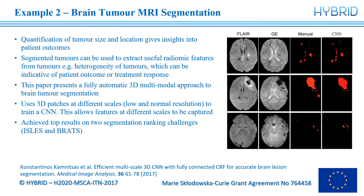Secondly, an example of tumour segmentation. Tumour segmentation allows for extraction of quantitative features from the tumour regions such as size and shape. We can also extract radiomic features such as heterogeneity of the tumour, which can be indicative of patient outcome or treatment response. In this paper from 2017, they segment brain tumours using multiple MRI sequences. To do this, they use 3D data, but rather than inputting whole images into the CNN, which would be very large, they split the images into 3D patches. They use patches at different scales — low and normal resolution — which allows information at different scales to be captured. The model achieved top results on two segmentation challenges. On the right, we see some examples comparing the manual segmentation and the CNN-based segmentation, which are very similar with slight differences such as in the middle example.